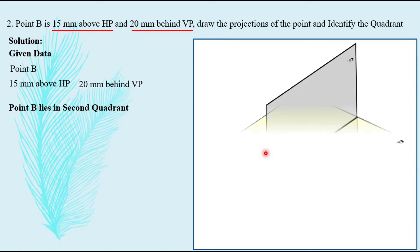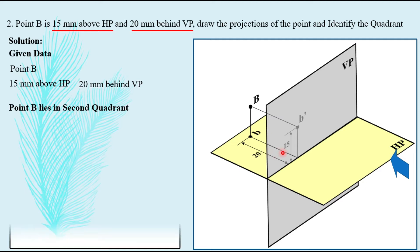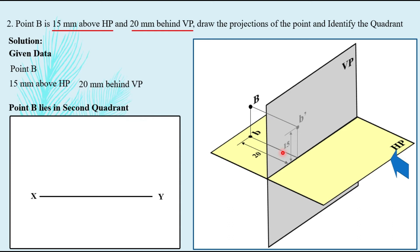Let us look at how it will be seen in the second quadrant. B is placed in the second quadrant and will have front view B dash above XY line; the top view will be on the horizontal plane. The corresponding distances are 15 mm above HP and 20 mm behind VP. For the solution: draw the XY line then a vertical projector. For the second quadrant, both front view and top view will be above XY line. Take 15 mm above XY and locate point B dash — that is the front view of B.